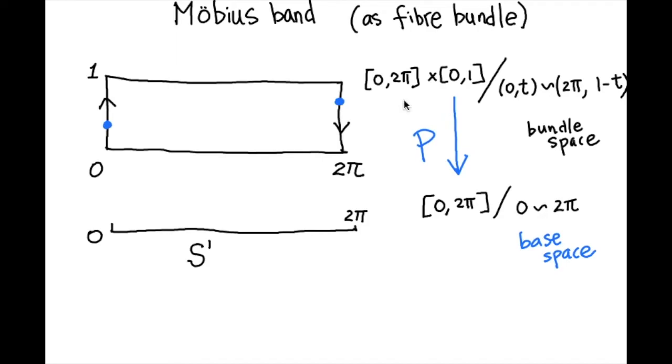A fiber bundle has a projection map from the bundle space to the base space. The projection is for each vertical line in the Möbius band like this, it is mapped to a point like this. If this vertical line corresponds to angle θ between 0 and 2π, then it is mapped to angle θ in S¹.